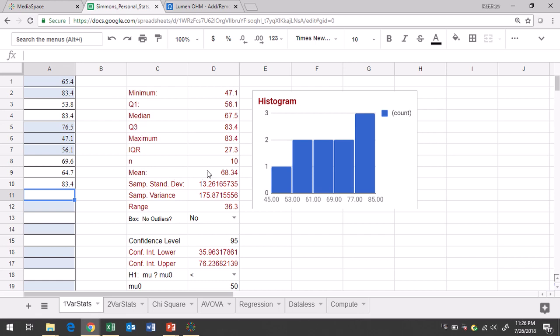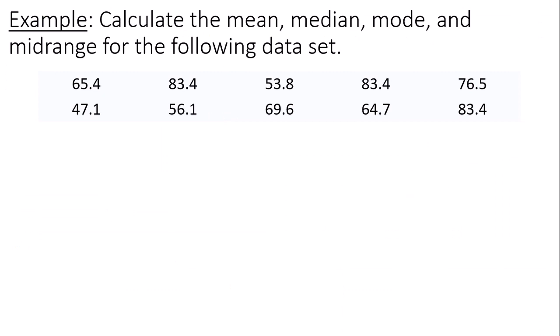Alright, I want the mean and the median. The mean is 68.34 and the median is 67.5. So my mean, also known as x bar, that's my sample mean notation, is 68.34. And then my median, represented by capital M, is 67.5.